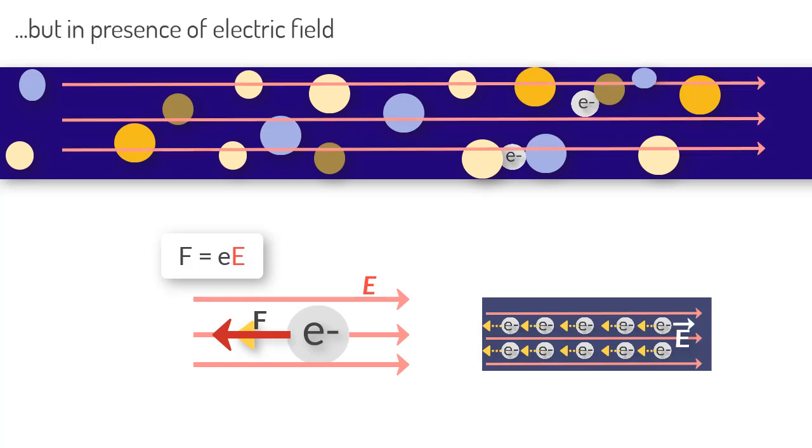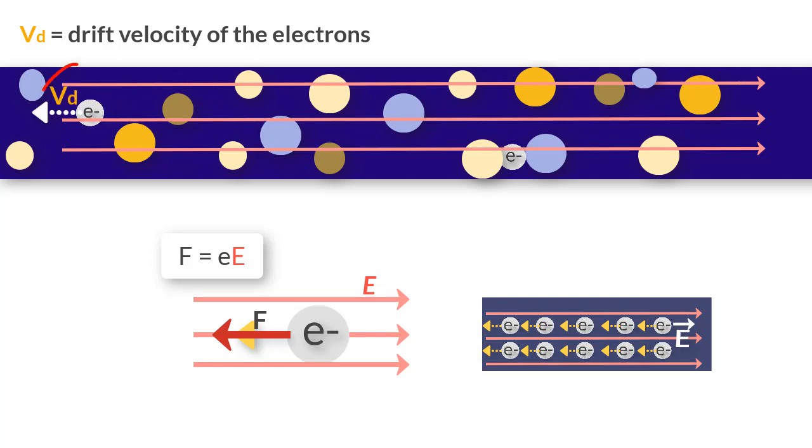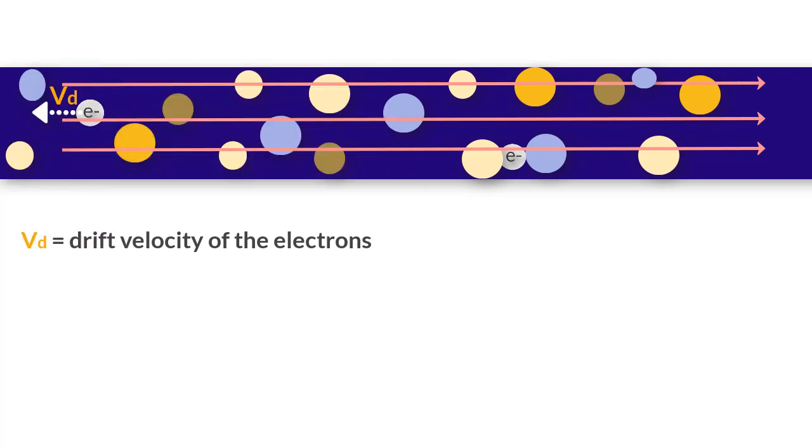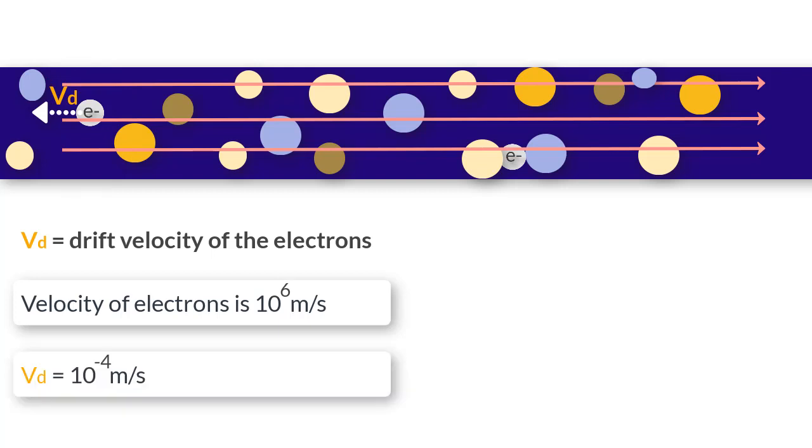The collisions are disallowing the electrons from gathering speed in forward direction. What happens is that the random collision of the electrons combined with the force they experience due to the electric field makes them drift forward at a very slow pace. And this drift has a certain velocity and we call it the drift velocity of the electrons. And this collective forward motion of electrons is what we call current. While the velocity of the electrons as they zip around is of the order of 10 to the power 6 meters per second, the drift velocity is often surprisingly small and of the magnitude of 10 to the power minus 4 meters per second.